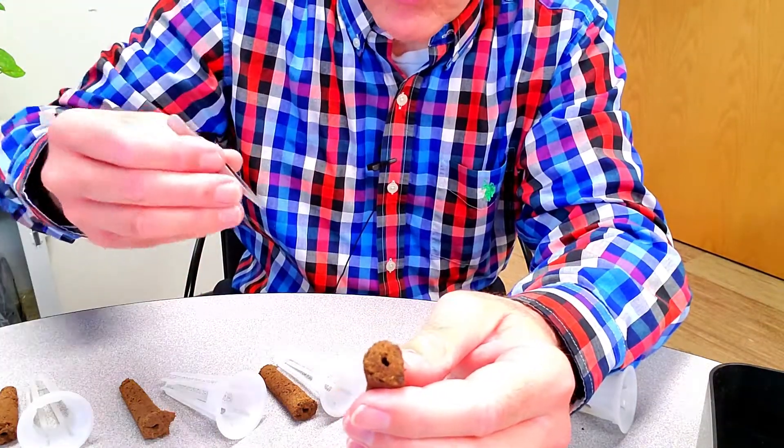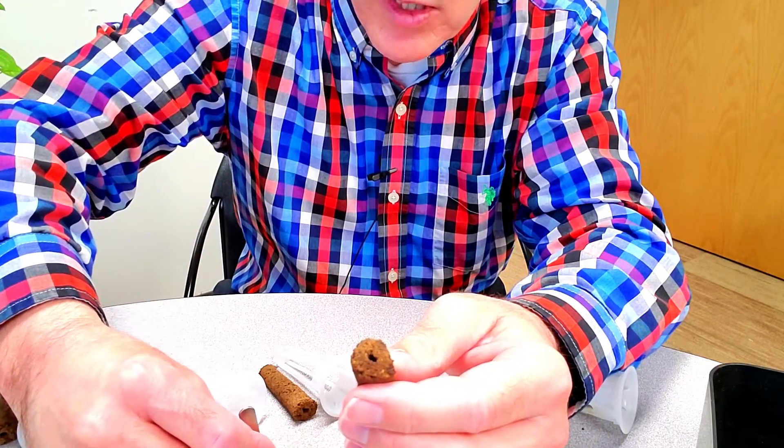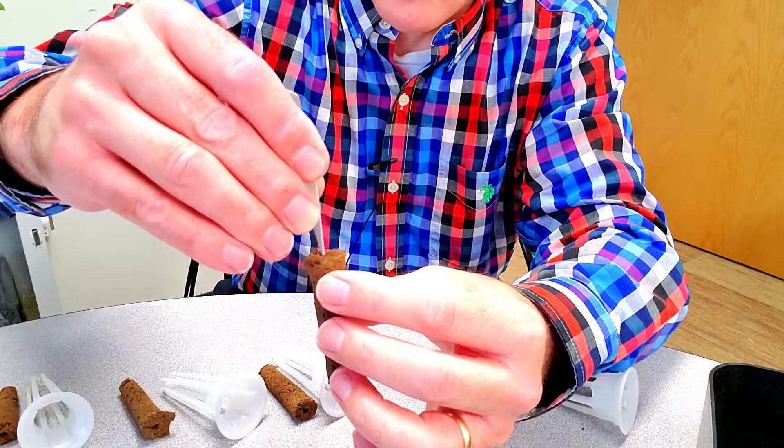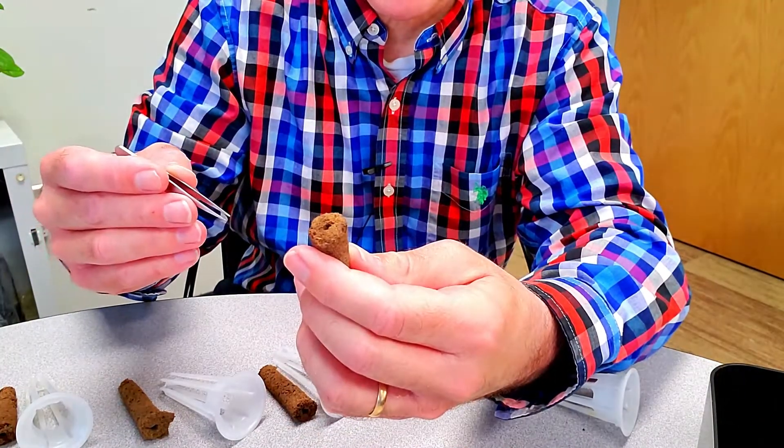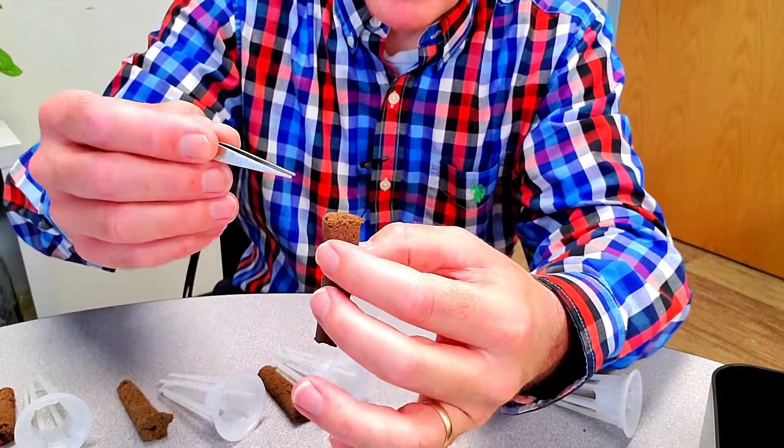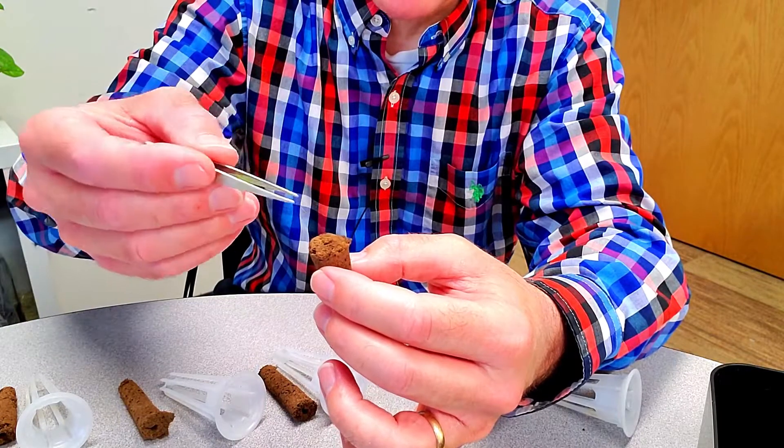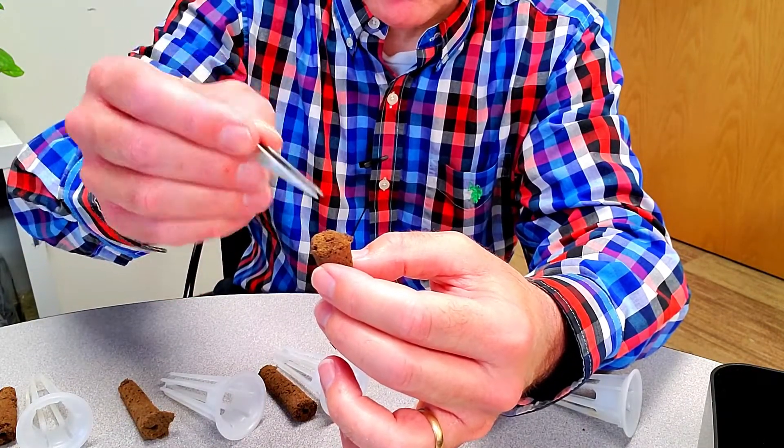These should all germinate, but I'm going to put two seeds in each of these. That way I'll have twice the chance of a good plant germinating. I'm not going to have both grow because radishes form a big bulb, so when they germinate, if they both do, I'm going to clip off one of the two and let the stronger one grow.